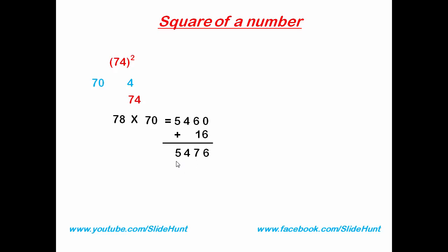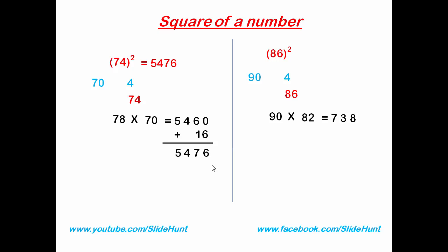Square the difference: 4 squared is 16. Add 16 to 5460 and we get 5476 — so the square of 74 is 5476. Next example: square 86. The nearest tens number is 90, the difference is 4. 86 plus 4 is 90, and 86 minus 4 is 82. Multiply: 90 times 82 is 7380. Add 4 squared (16) to get 7396.